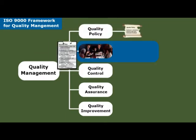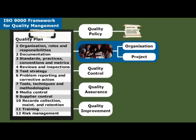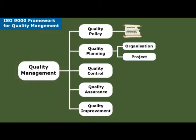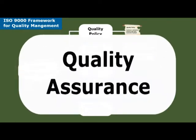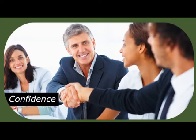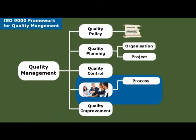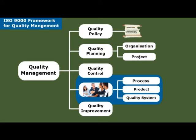Quality planning activities address what you're going to do about quality for the overall organisation and for each individual project. Quality assurance is really about confidence — confidence that quality standards will actually be met in the end product. We develop this confidence by assuring the development process, our work products, and the quality management system itself.